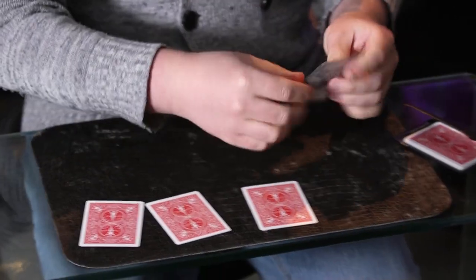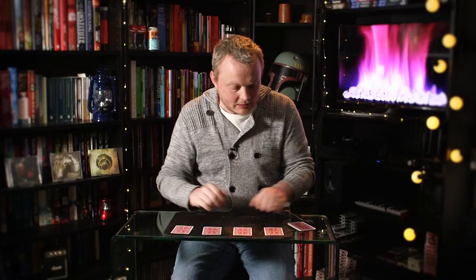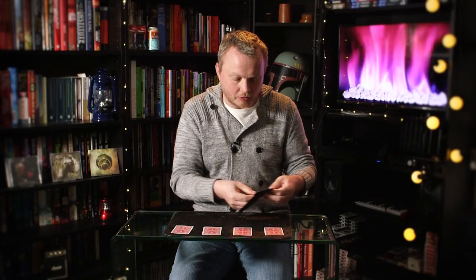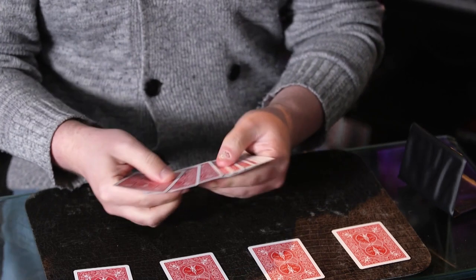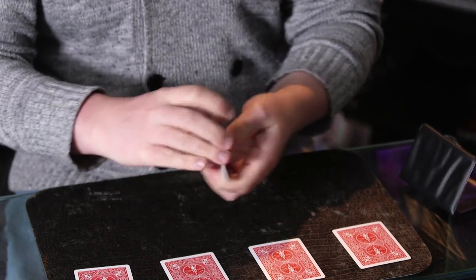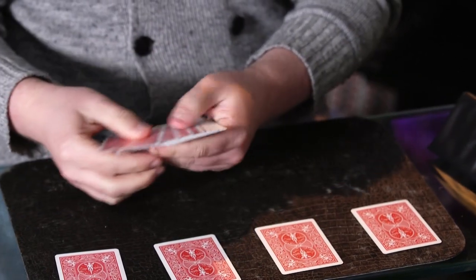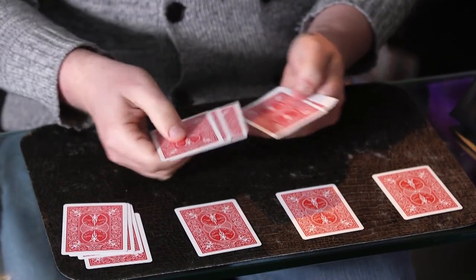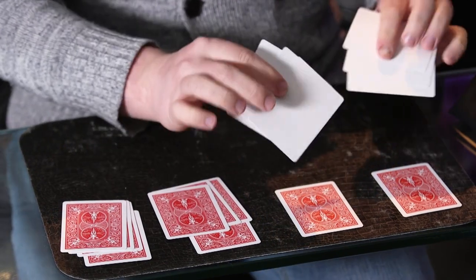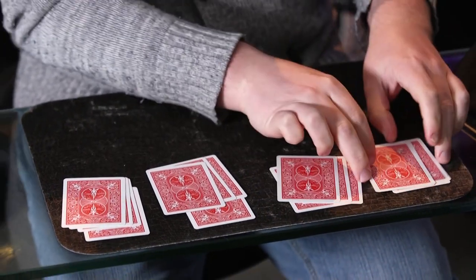So we're going to lay the jokers out in a line just like this and then I've got some really interesting cards to put on top of them. It looks like they're the same as the others but if you check them out they've actually got no faces at all. They are blank cards and it just keeps everything super clear and easy to follow. We're going to plonk three of each blank card onto each joker like that.